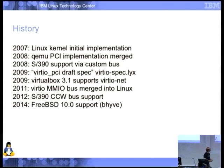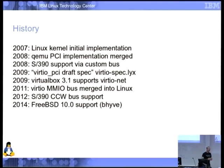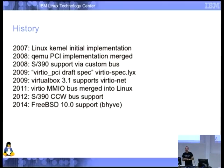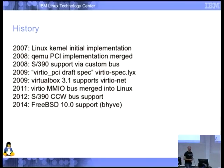That same year, the S390 people took what I'd done for Lguest and made a variant for S390 platforms — they produced their own custom bus. The year after we decided PCI was where the action was, so we created an actual spec — nominally independent of the QEMU and Linux implementations — focused on PCI, called the VirtIO PCI Draft Spec. It was also the year that VirtualBox 3.1 came out supporting VirtioNet, giving us our first completely independent implementation.